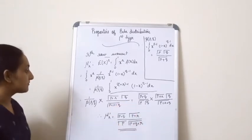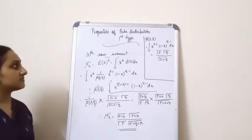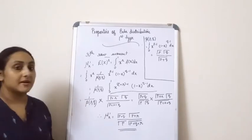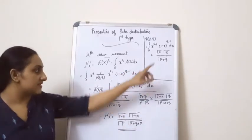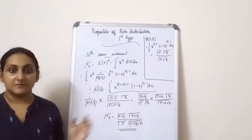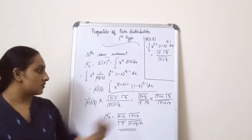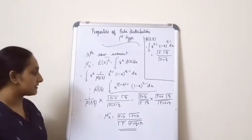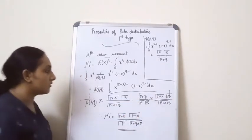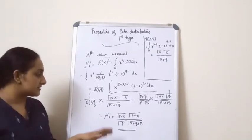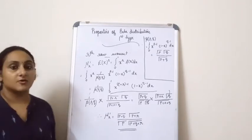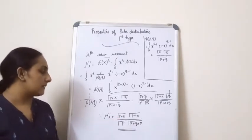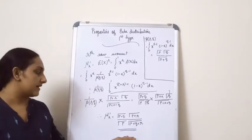We already know Beta(p,q) = Gamma(p)*Gamma(q)/Gamma(p+q), so 1/Beta(p,q) is the reciprocal of that. Multiplying through, the Gamma(q) terms cancel. Finally, mu_r' equals Gamma(p+q) * Gamma(p+r) divided by Gamma(p) * Gamma(p+q+r). This is our final result for the r-th raw moment.